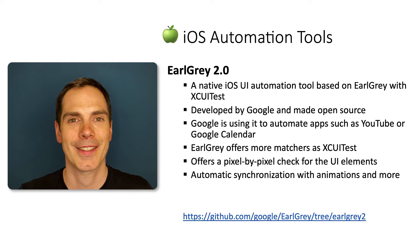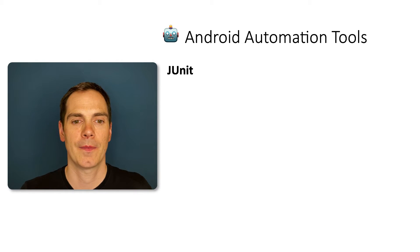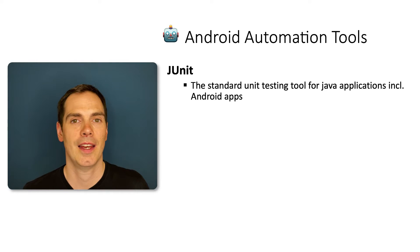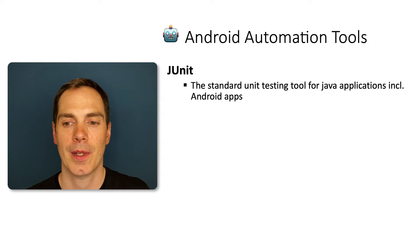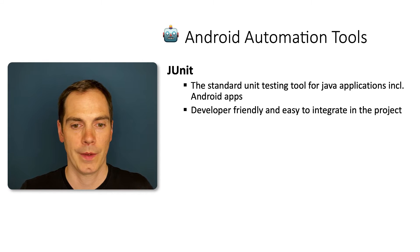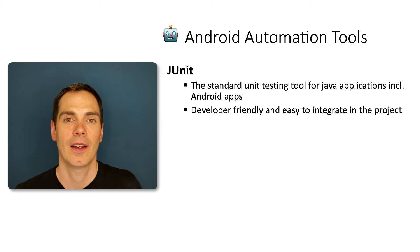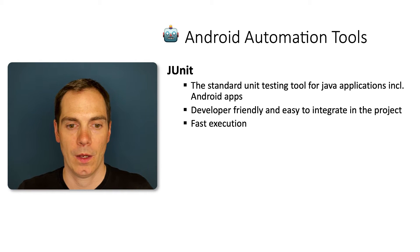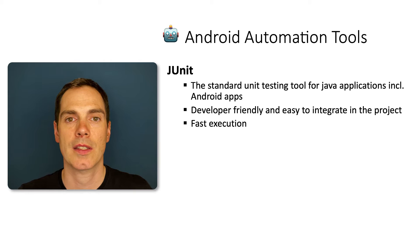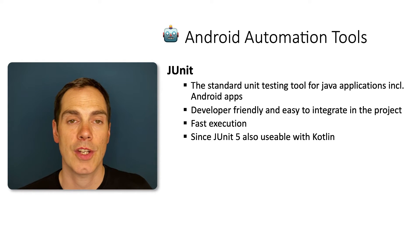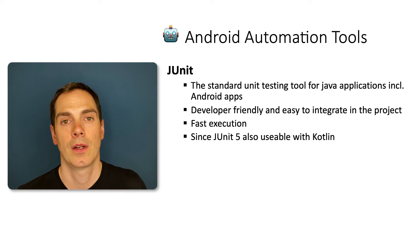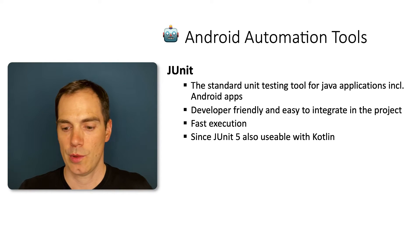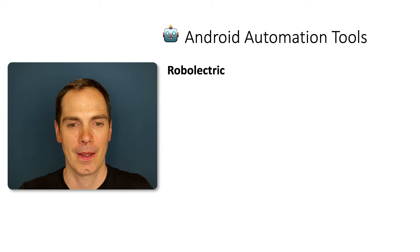On the Android side, first we have JUnit — no surprise there. It's the de facto standard unit testing framework for Java applications, including Android apps. It's developer-friendly, easy to integrate into a project, well-established, and very fast — executing thousands of unit tests in seconds. Since JUnit 5, it's also usable with Kotlin, so you can write Android unit tests in Kotlin just as you did before in Java.